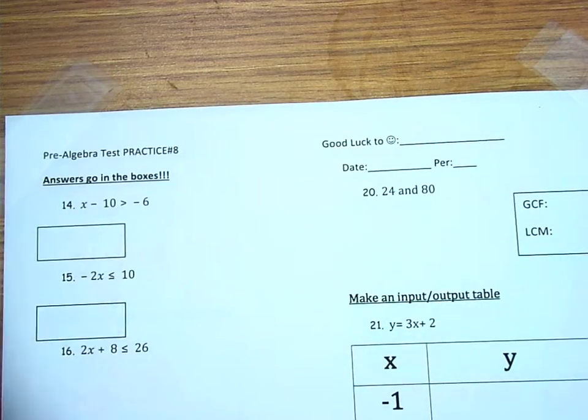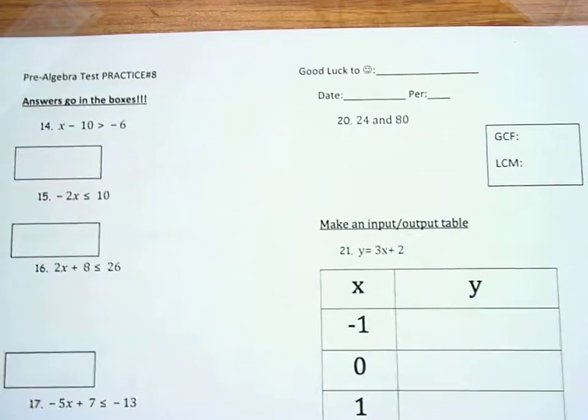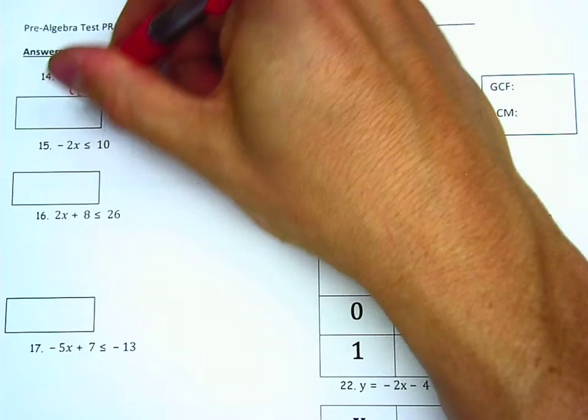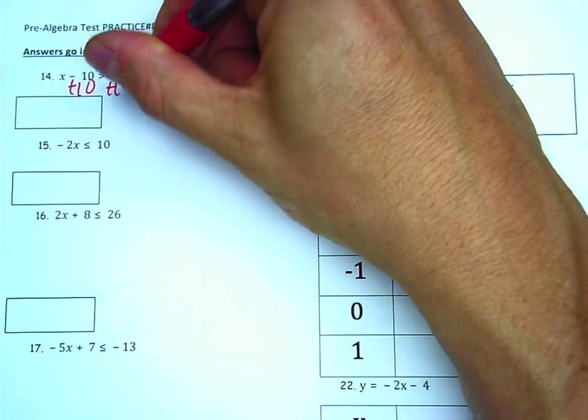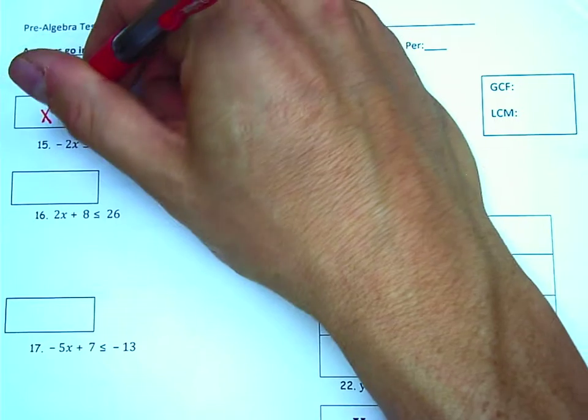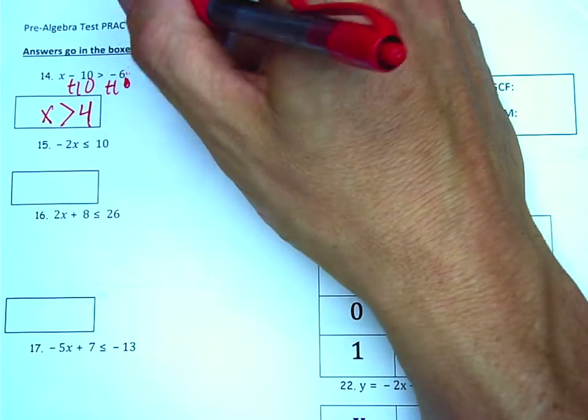And we're back. Questions 14 through 25 now. Question 14, we're going to add 10 to both sides. These are opposite signs, negative 6 and positive 10, so they will subtract. And I'll yield x is greater than 4. Opposite sign subtract.